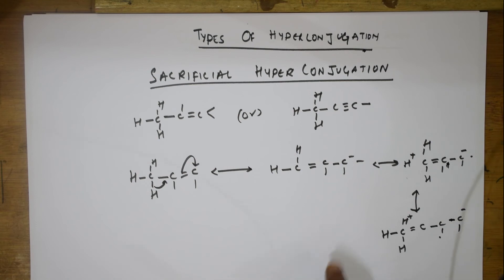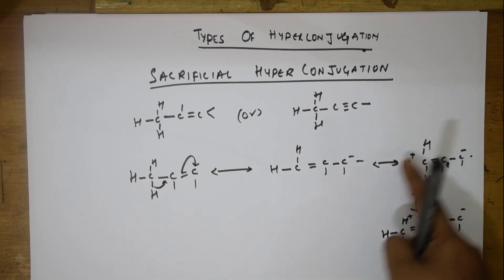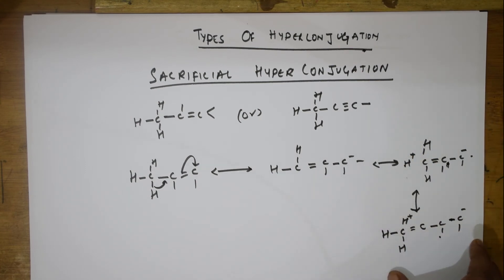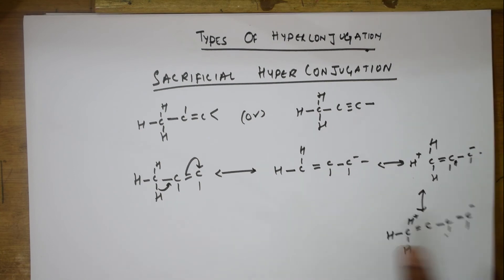This involves a sort of sacrifice of the bond, isn't it? Every time, this sort of sacrifice of the bond here, this is sacrificing, this is sacrificing, this is sacrificing. That's why it is called sacrificial hyperconjugation. Let us see the next one.